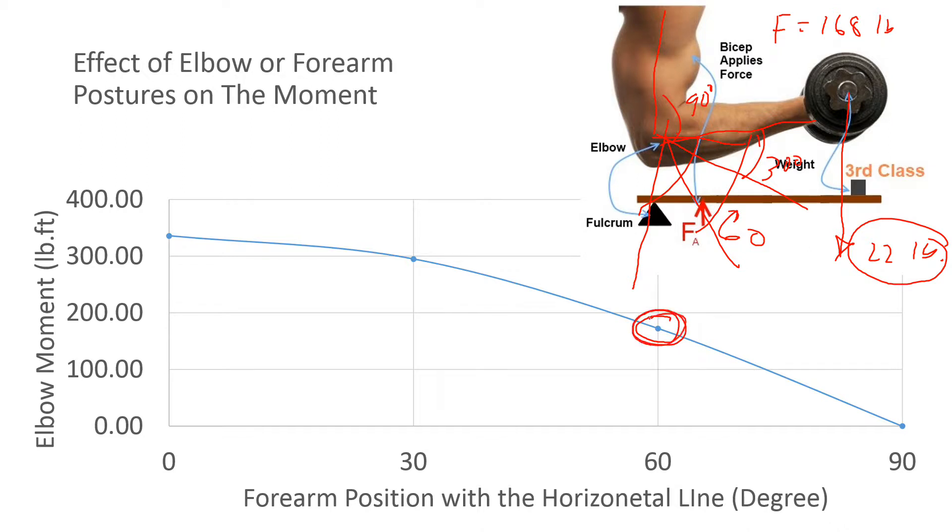So if you go this way 30 degrees, then the moment will be approximately just under 300 pound-feet. And then for 60 degrees it's going to be about 170, and for 90 degrees it's going to be zero.